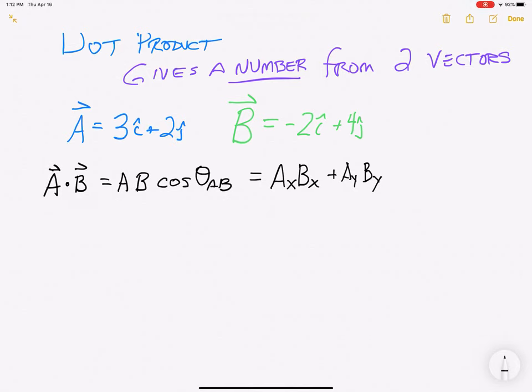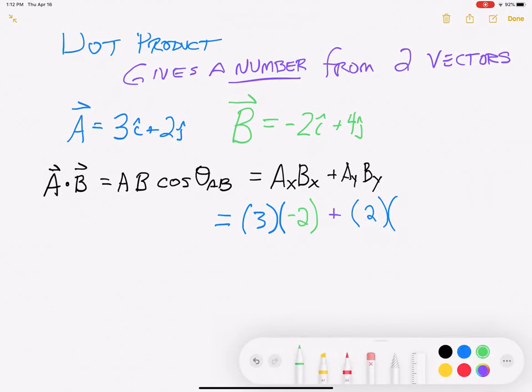However, it has to come out as a number, which means we take our components for each of those vectors and we get a number. So, back to our example, what we would get is 3 times minus 2 plus 2 and the 4 off the j in the y direction and we can just crunch this as minus 6 plus 8 so we're going to wind up with a 2.